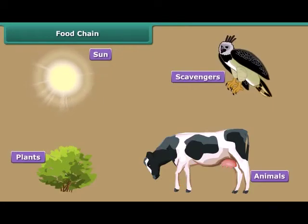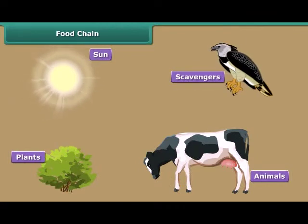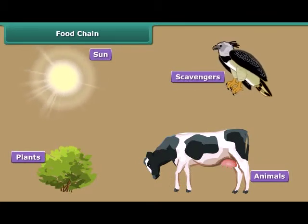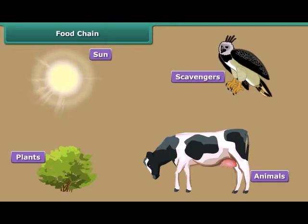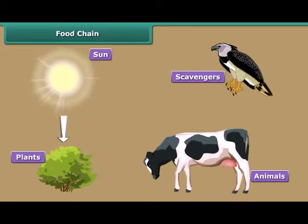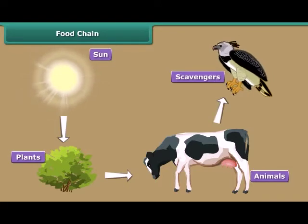The food chain is an arrangement in which energy passes from one organism to another. The main constituents of the food chain are the sun, the plants, the animals and the scavengers.